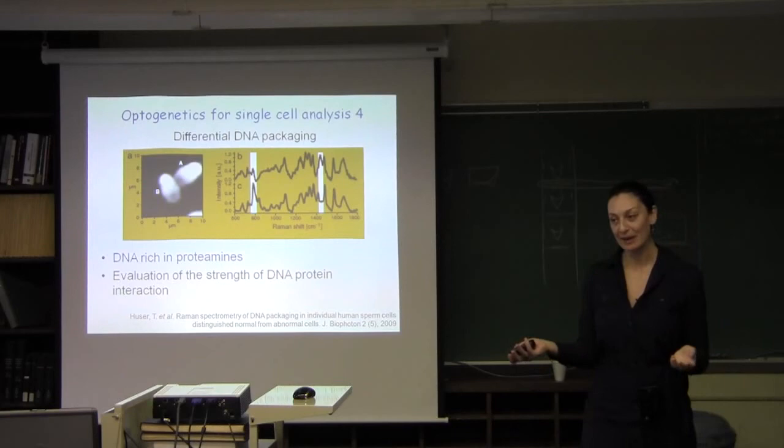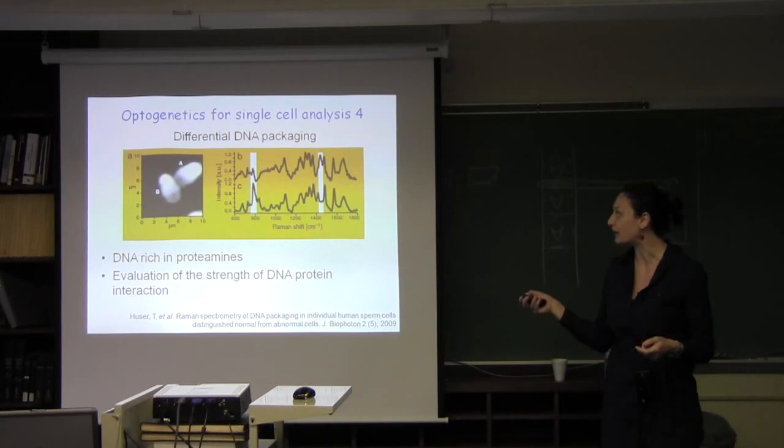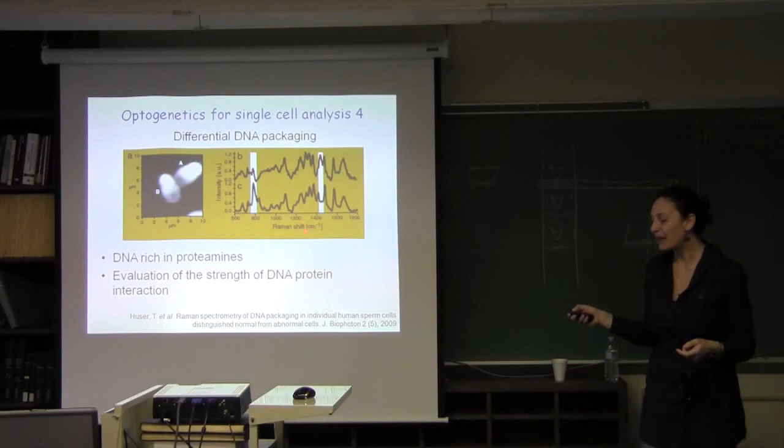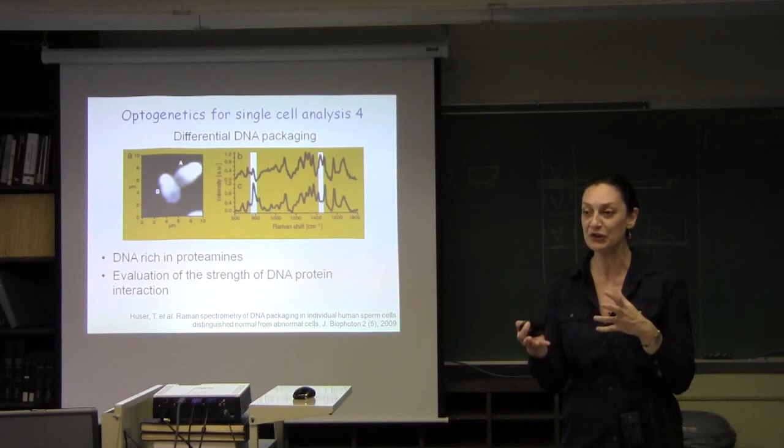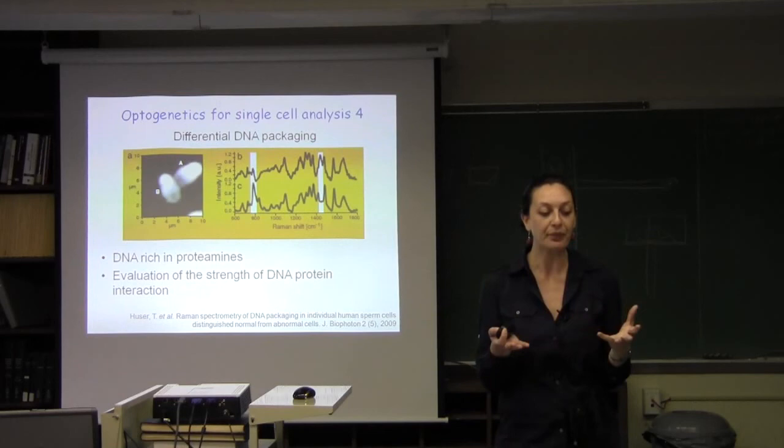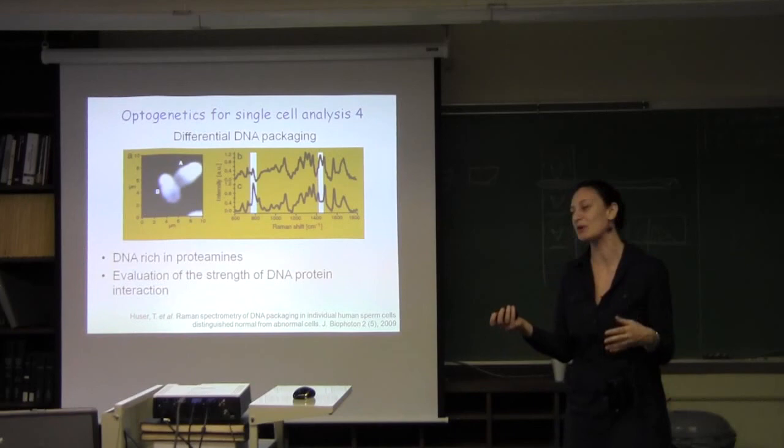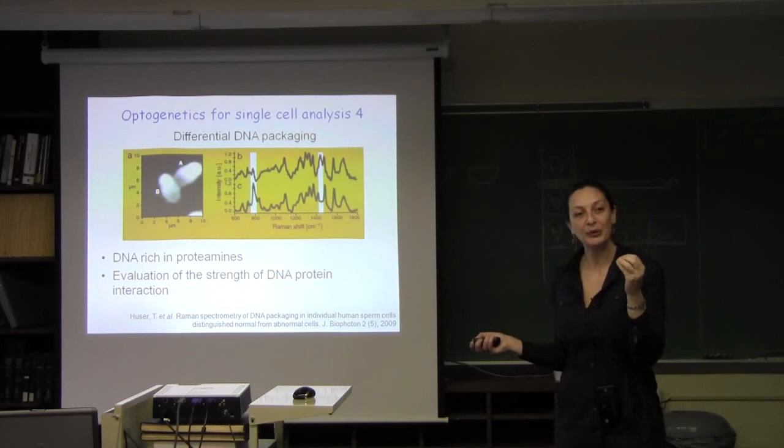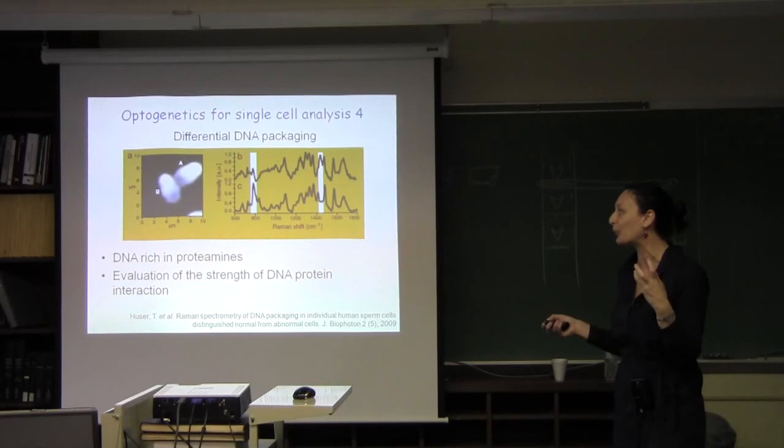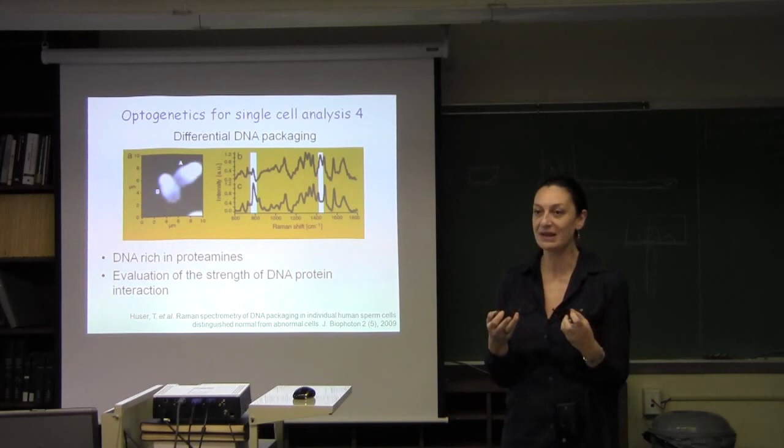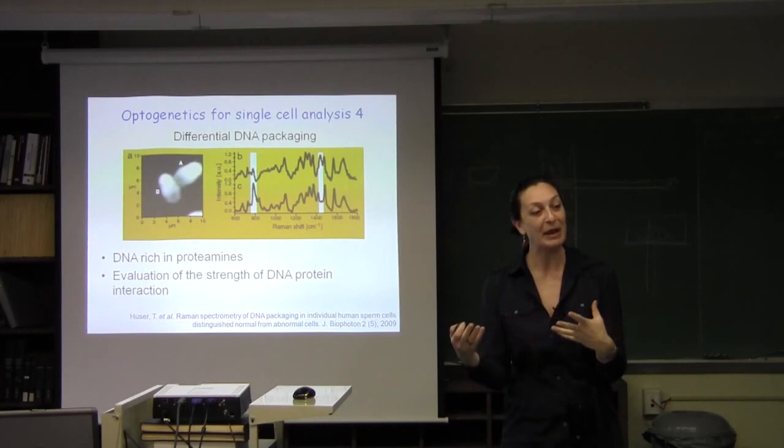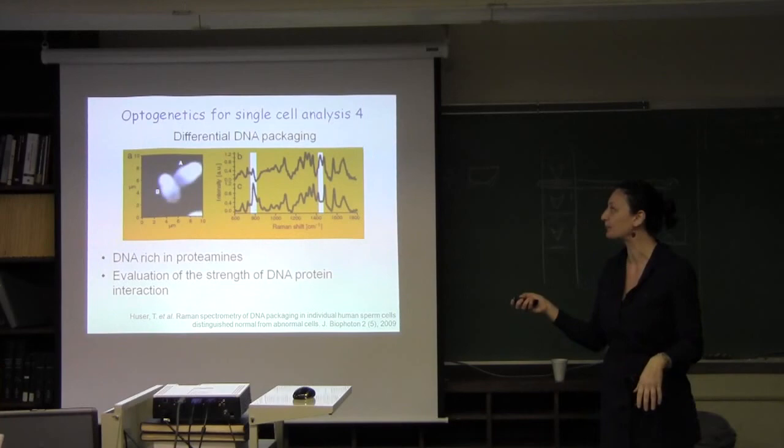Another application that I was reading about is optogenetics to differentiate DNA packaging. This paper relates to different DNA packaging in sperm cells. It seems that differential packaging, in particular in human sperm cells, influences the viability of these sperm cells. Just looking at the ratio of those proteins that are bound to the DNA, they could evaluate the strength of the DNA packaging in these cells and make predictions about the viability of human sperm cells.